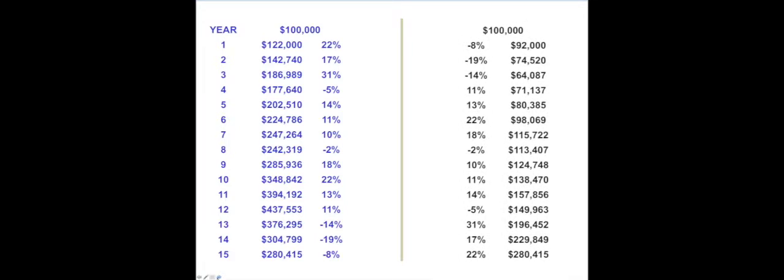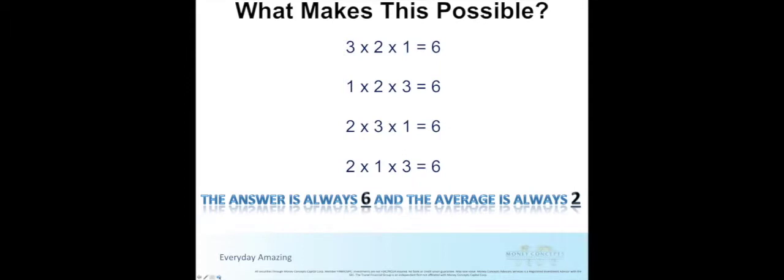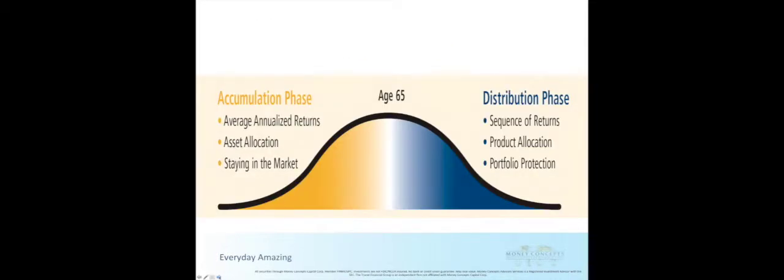As you can see, the same $100,000 invested over 15 years ends up with the same total return, even though the market fluctuations have been exactly reversed. What makes this possible? The math shows that the answer is the same either way that the numbers are ordered. Since that is the case, during your accumulation phase, over the long term, if you invest methodically in the stock market, your investment should grow.